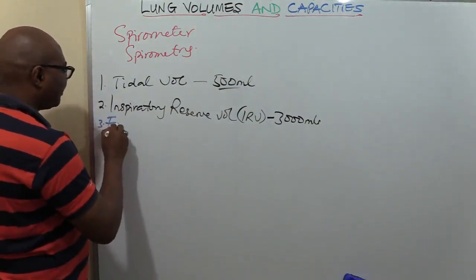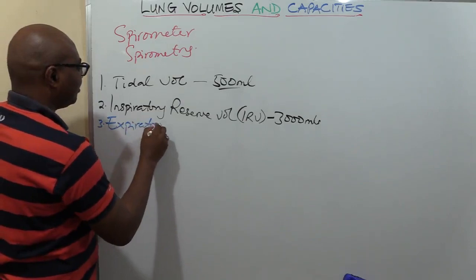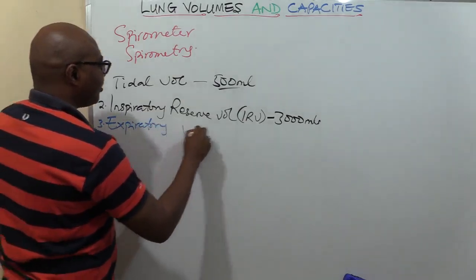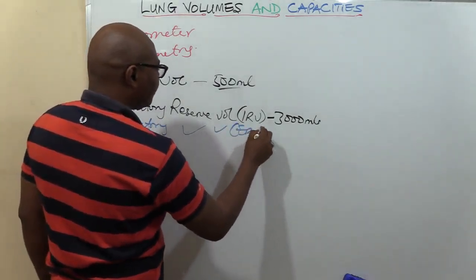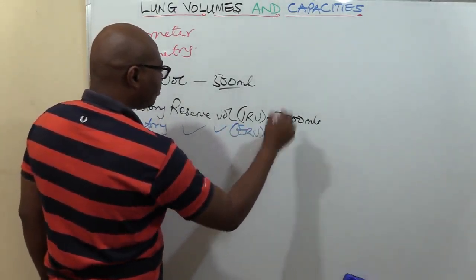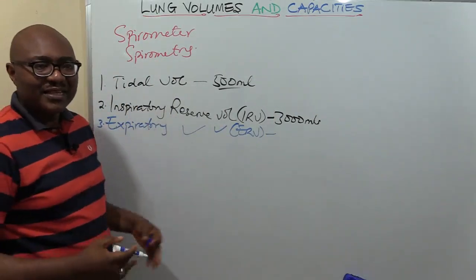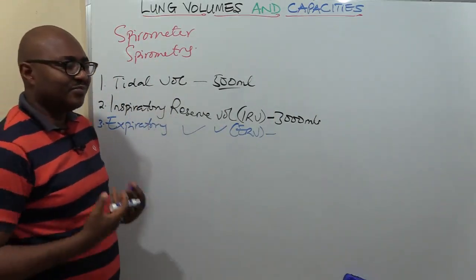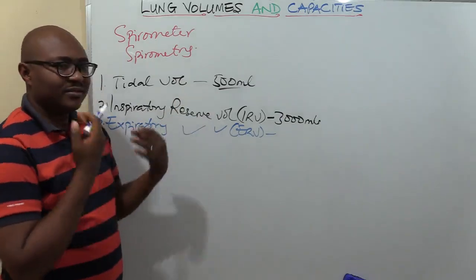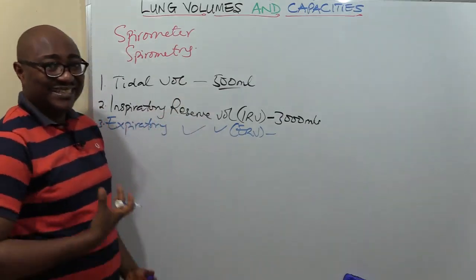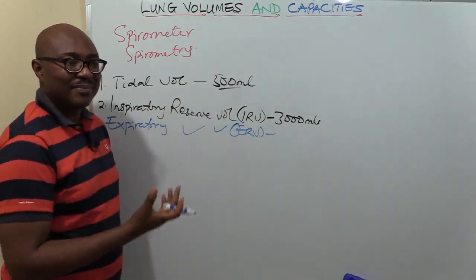Next is the expiratory reserve volume, or ERV. Logically, this is just the opposite. After you've breathed out the normal 500 ml tidal volume, there is an additional amount you can forcefully expire at maximum.